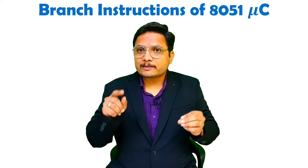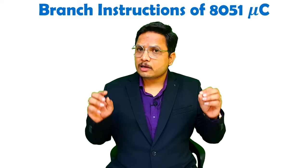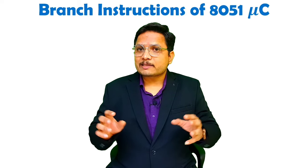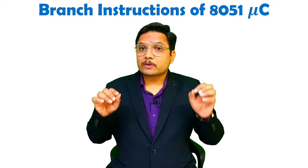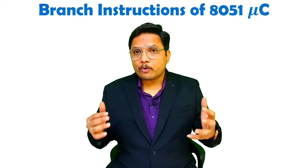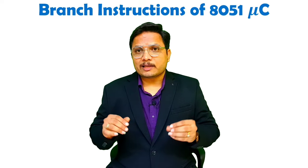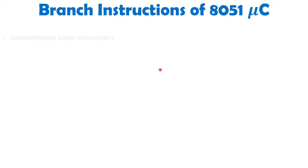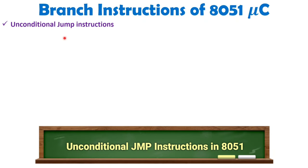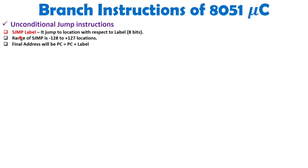Take note that all Conditional Branch Instructions are Short Jump only. I'll explain all these instructions along with examples so you can have a fair enough idea about how 8051 executes Branch Instructions. Now, when we talk about Unconditional Jump Instructions, we have Short Jump, Absolute Jump, and Long Jump.